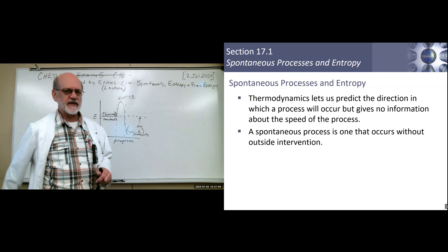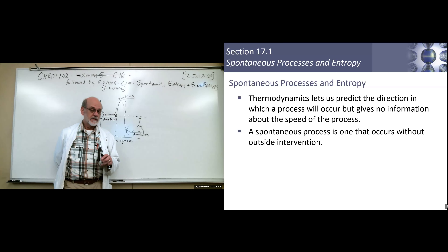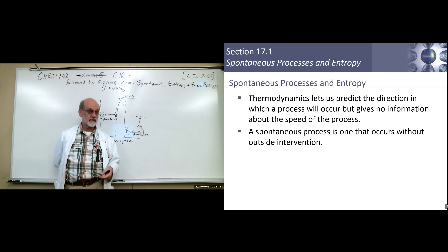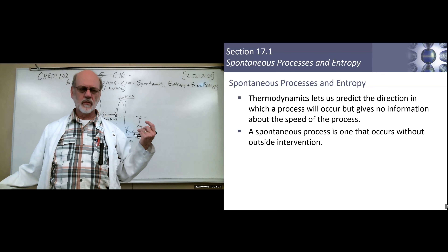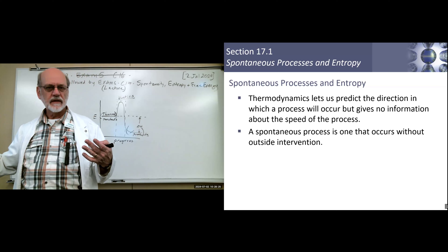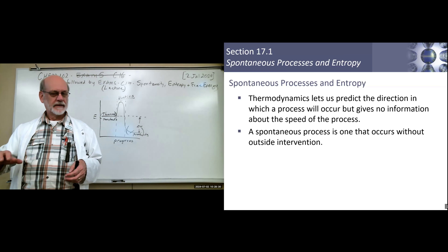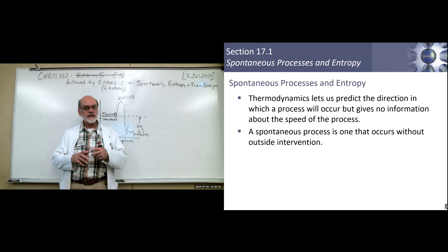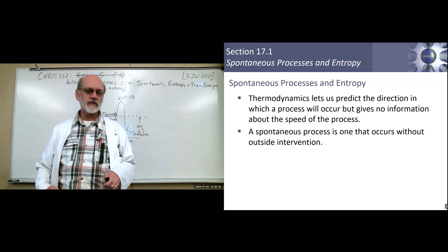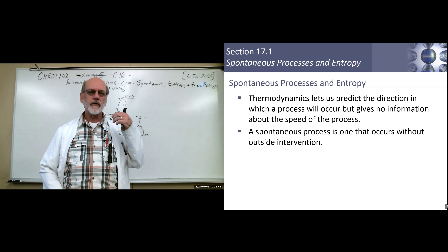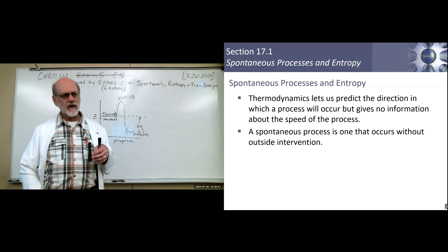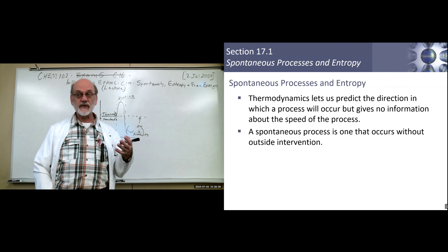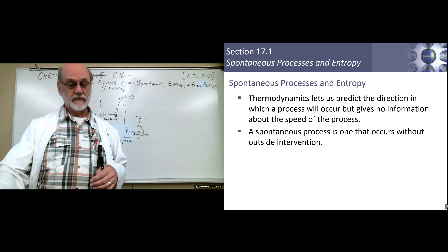When we talk about a spontaneous process, we mean a process — and it doesn't have to be chemical, it can be physical or chemical — that proceeds without any outside intervention. For example, if your windows are not insulated, in the summer you get heat transfer into your house, and in the winter you lose heat to the environment. That's a spontaneous process. We always know that heat goes from high temperature to low temperature. But there are some processes that occur spontaneously that we can't explain by what we know up to this point.